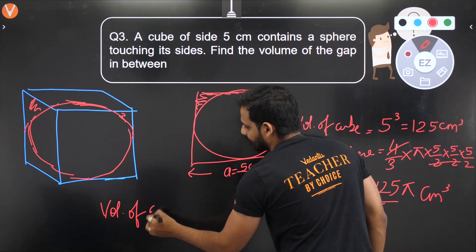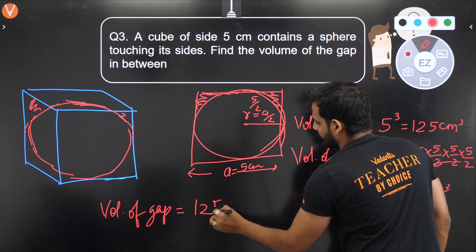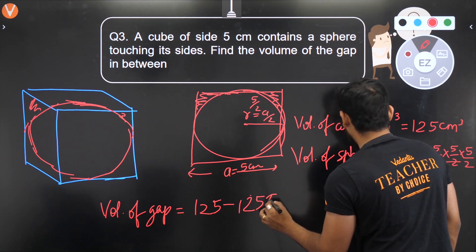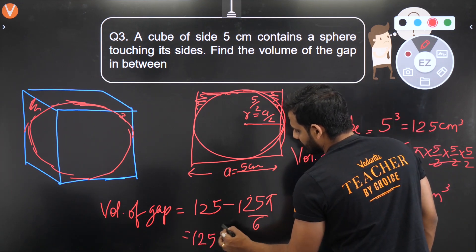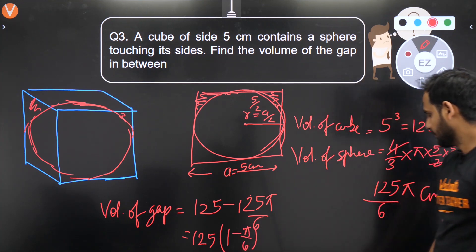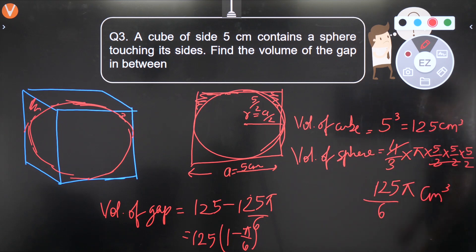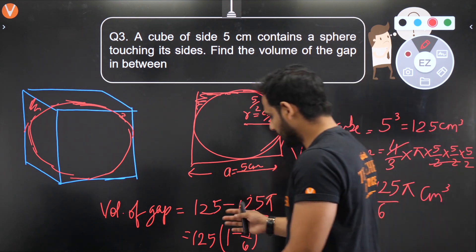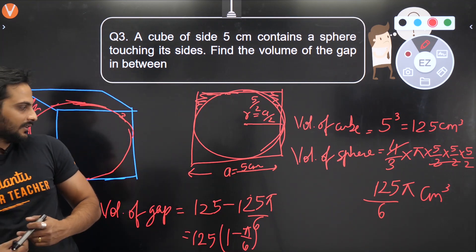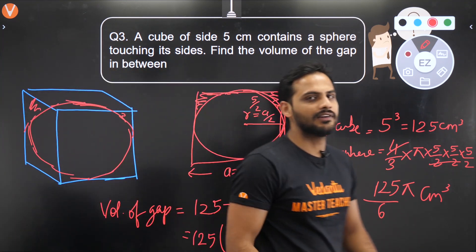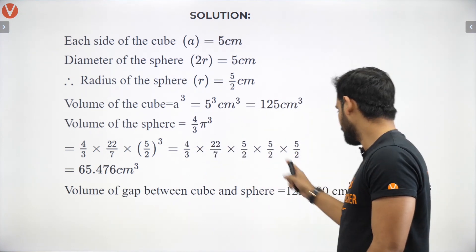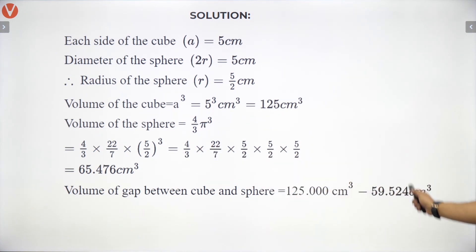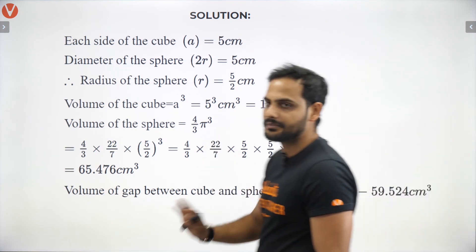Volume of gap = Volume of cube − Volume of sphere = 125 − 125π/6 = 125(1 − π/6). Substituting π ≈ 3.14: 3.14/6 ≈ 0.5, so the gap ≈ 125 × 0.5 ≈ 60 cm³. After precise calculation the answer comes to approximately 59.5 cm³, so you just need to subtract the two volumes.